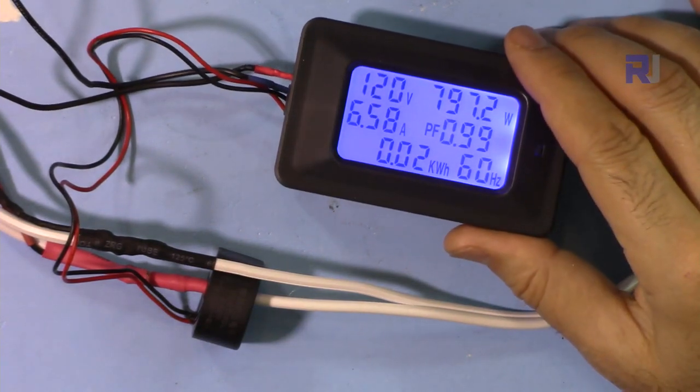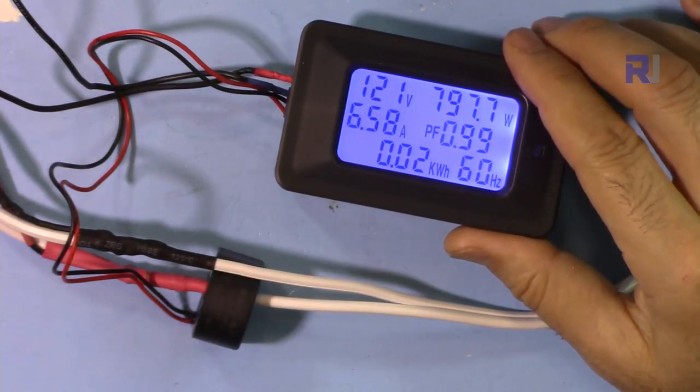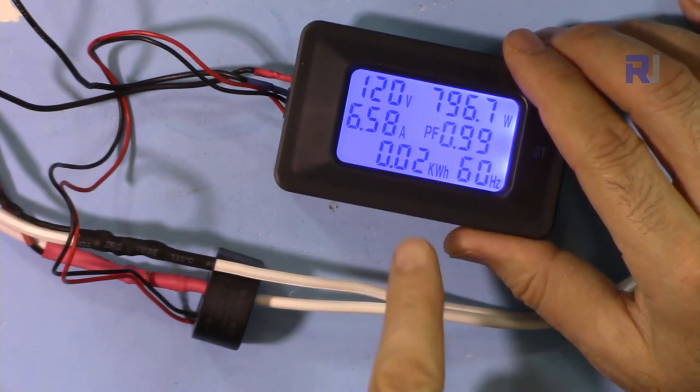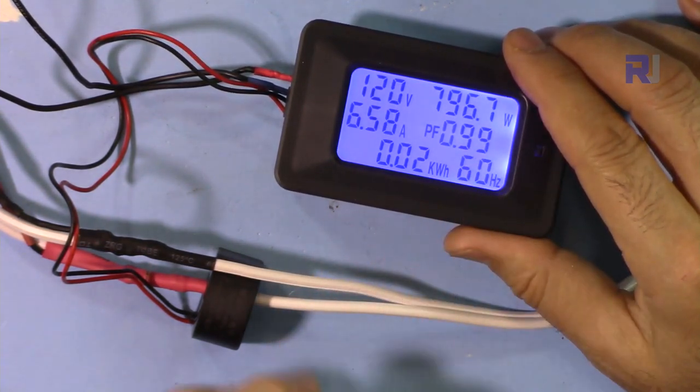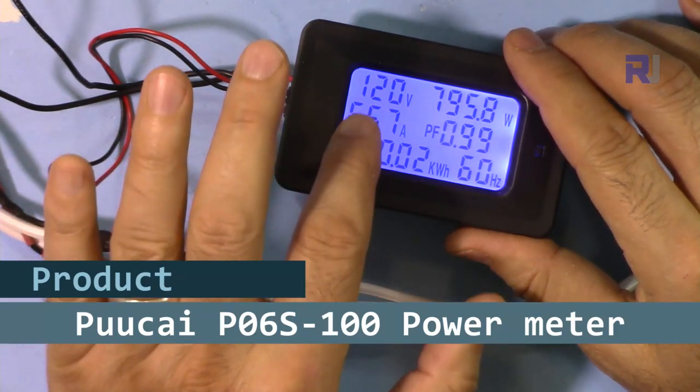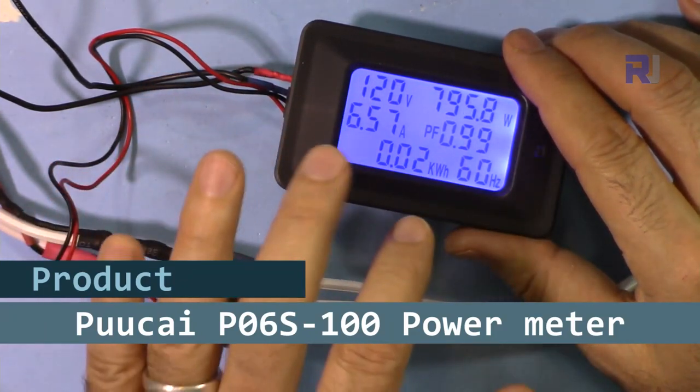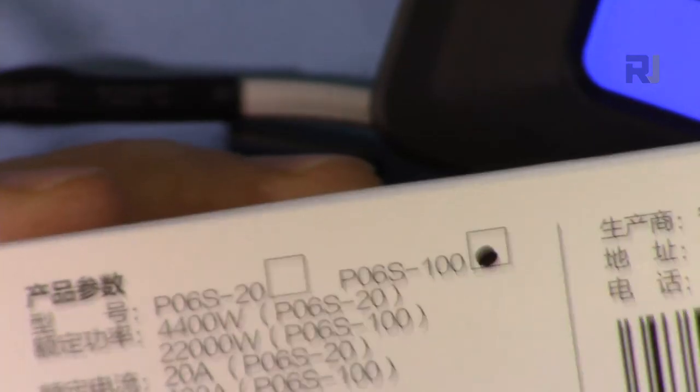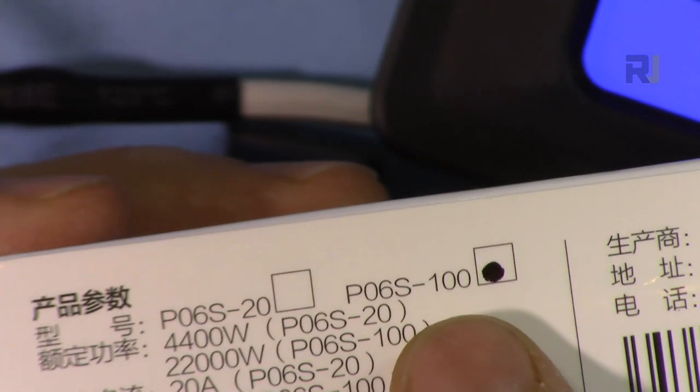Hi, welcome to a product review and test by Robojax. In this video we're going to see how we can use this AC power meter that can measure up to 100 ampere. This can display voltage, current, power, energy, even frequency and power factor.